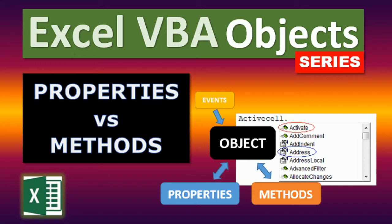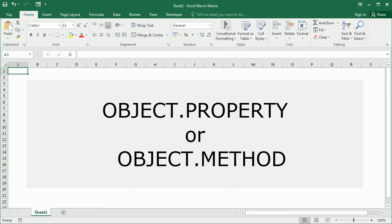Properties and methods allow us to get and modify the attributes and state of objects. A property is a characteristic or attribute of an object, such as the name, the color, etc. A method is an action that can modify the state of the object, such as to open, to close, to copy, etc. Both properties and methods are used after the object reference, separated with a dot or period. Most properties and methods come with additional information such as values or parameters that are added after, and are used differently with a property or with a method.